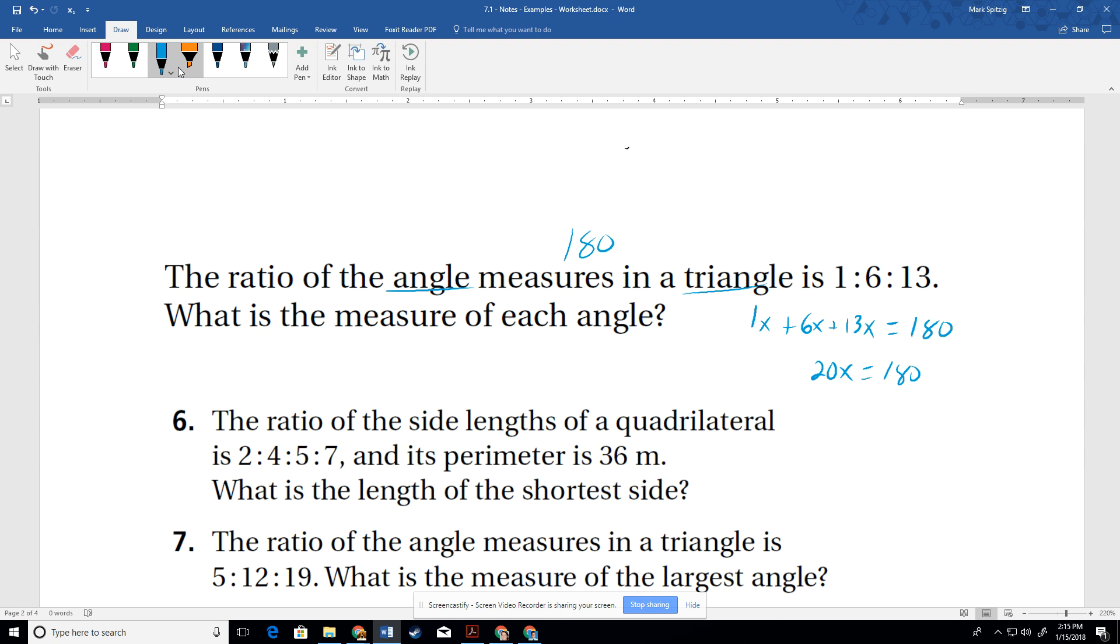And of course, x equals 9. All right, that makes sense. So we have x equals 9 towards the measure of each angle. So if we actually plug this back in, well, x is 9, so 9 degrees is one of them. And then we know that this is 117.